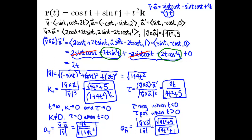One important thing to note is that the tangential component of acceleration is positive sometimes and negative sometimes. When that tangential component of acceleration is positive, that tells us that the object is speeding up as it moves along the curve.